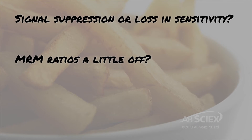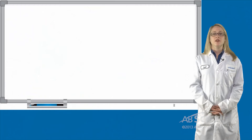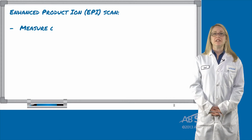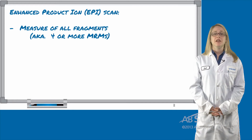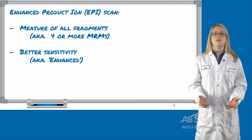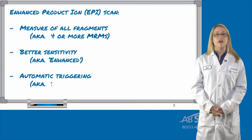Have you ever looked at your MRM ratios and thought that they are just a little off, and you're just not sure if this is a contaminant or a matrix effect? Q-TRAP can help you answer these questions. When using Enhanced Product Ion Scanning, or EPI, with Q-TRAP, it is basically like collecting more than four MRMs for any detected compounds in your sample. This means that if your MRM ratio is slightly off, or you get suppression that reduces sensitivity of your signal, you are able to get a sensitive measure of other fragments. Think of it as collecting data on more than four MRMs without any additional effort — it's automatic.